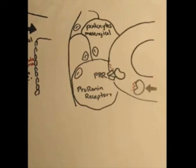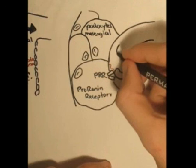And when the pro-renin binds to the pro-renin receptor, it cleaves off the extra 43 amino acid chain, as shown, leaving just renin.